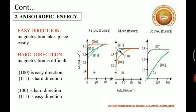Second one, anisotropic energy. That is, the excess energy required to magnetize the specimen along hard direction over that required to magnetize along easy direction.